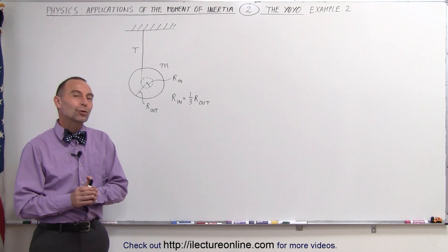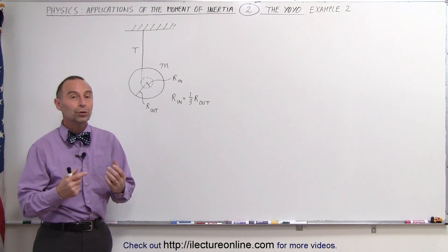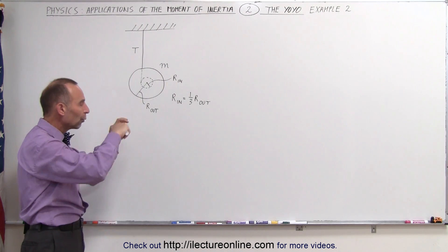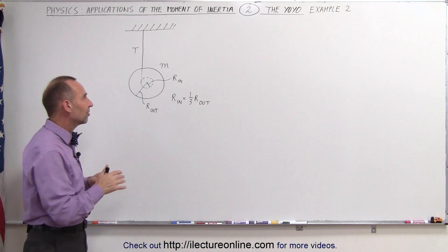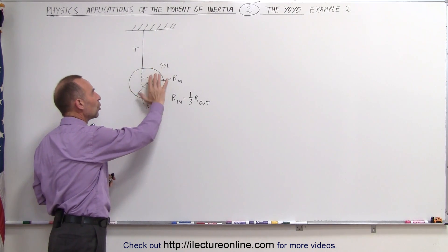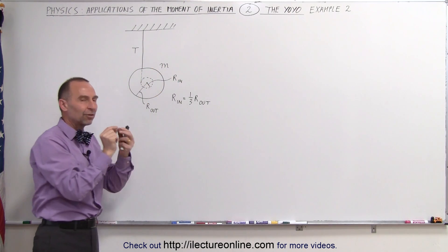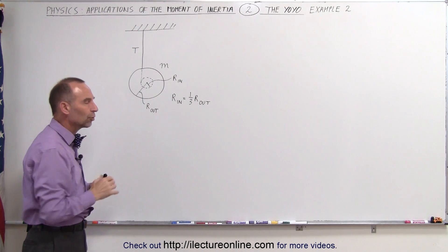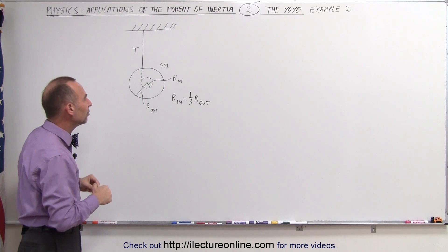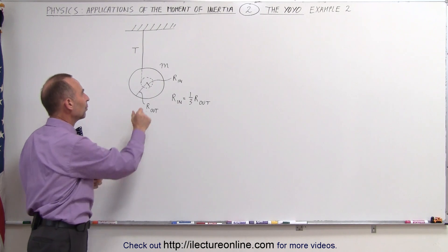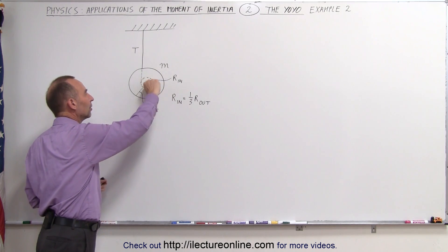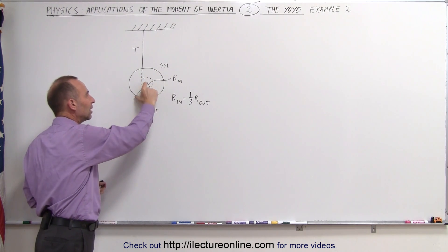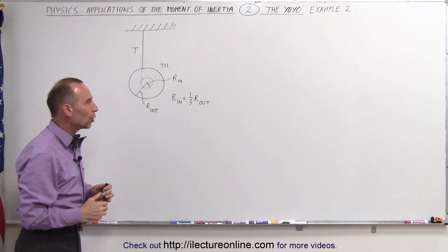Welcome to ElectronLine. Here we're going to look at what we consider a real yo-yo: two discs put together with a small cylinder in the middle over which the string is wound. The total mass of the yo-yo is equal to m, and the mass of the little cylinder in the middle can be ignored. Notice that the radius of the inner disc over which the string is wound is about one-third the radius of the total outer disc of the yo-yo.